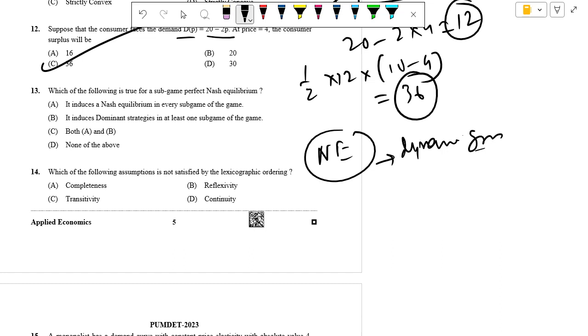This is a true definition. A sub-game perfect Nash equilibrium is a Nash equilibrium in every sub-game of a larger game.